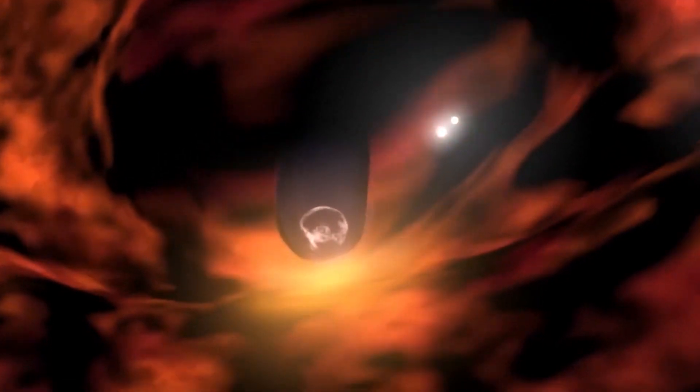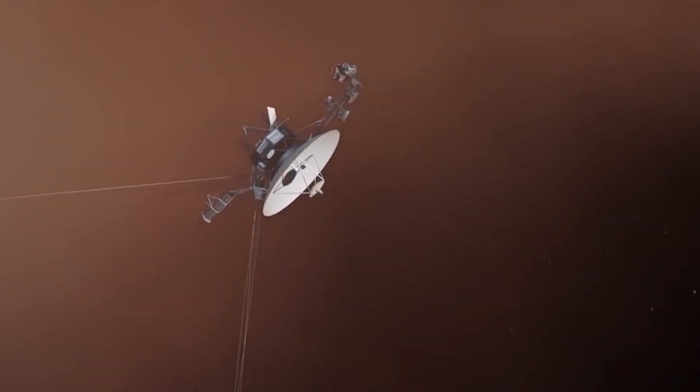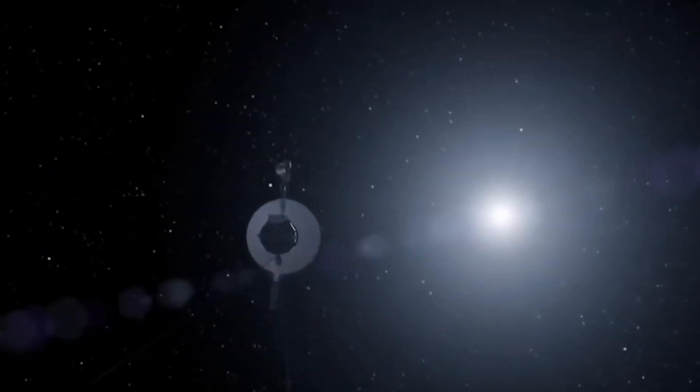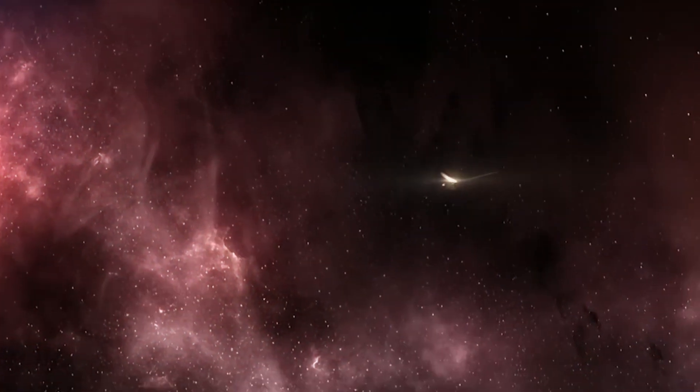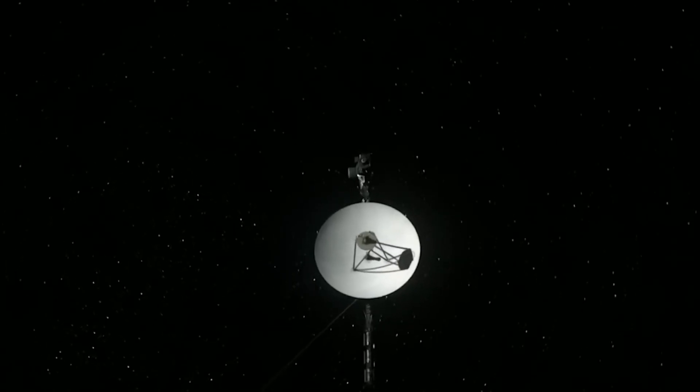The data collected by Voyager 1 and 2 shows that the intensity of cosmic rays and other high-energy particles has increased significantly in the last few years. This increase is particularly concerning, as it suggests that we may be approaching the edge of our solar system, known as heliopause.